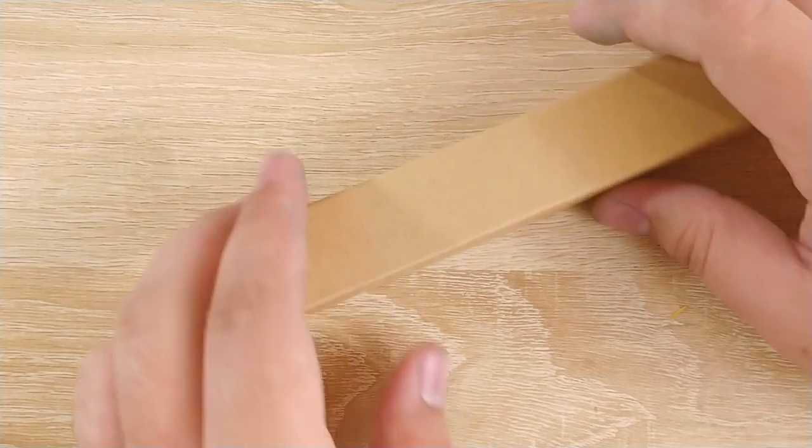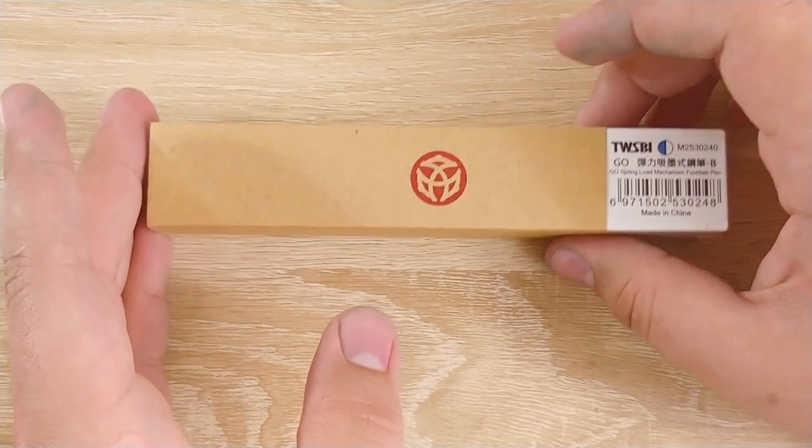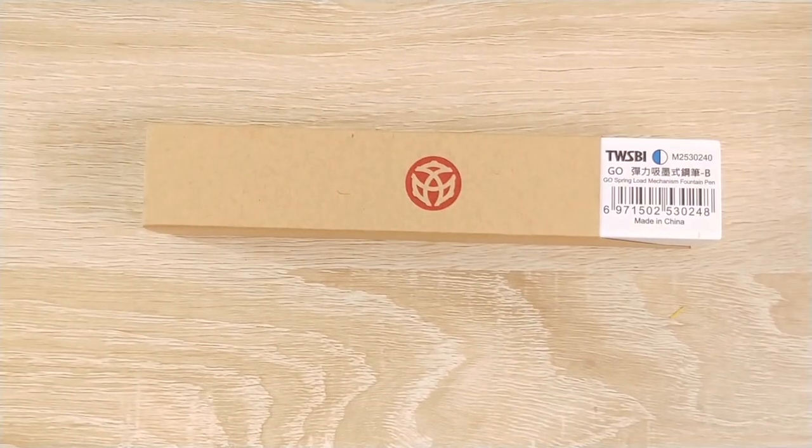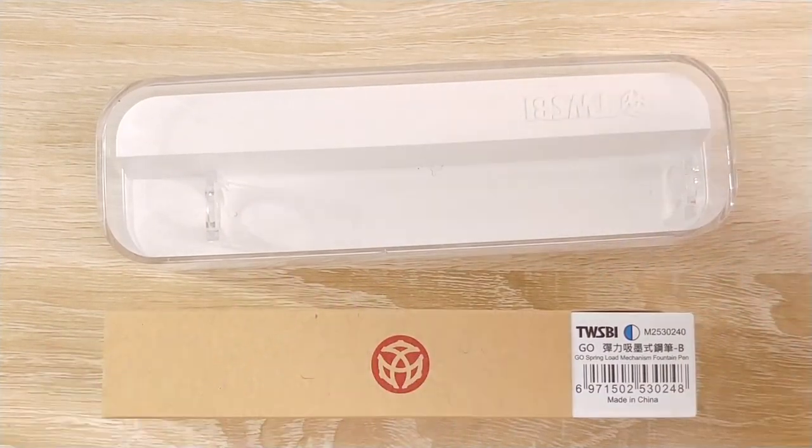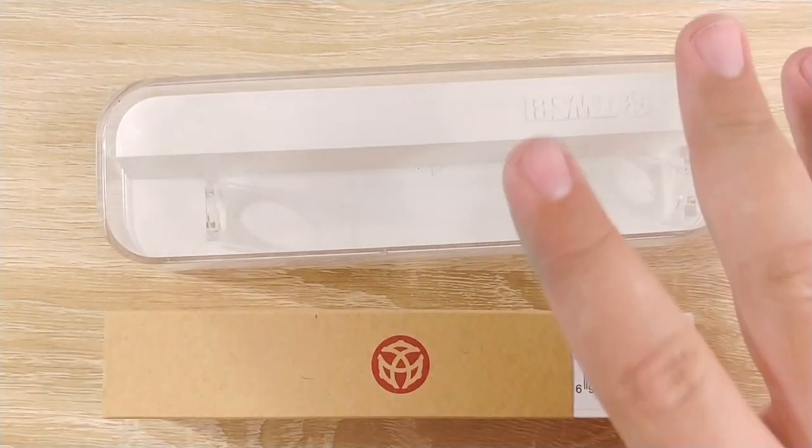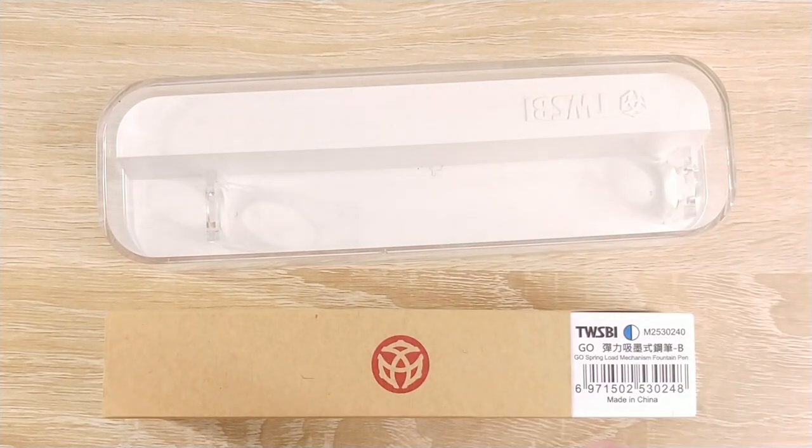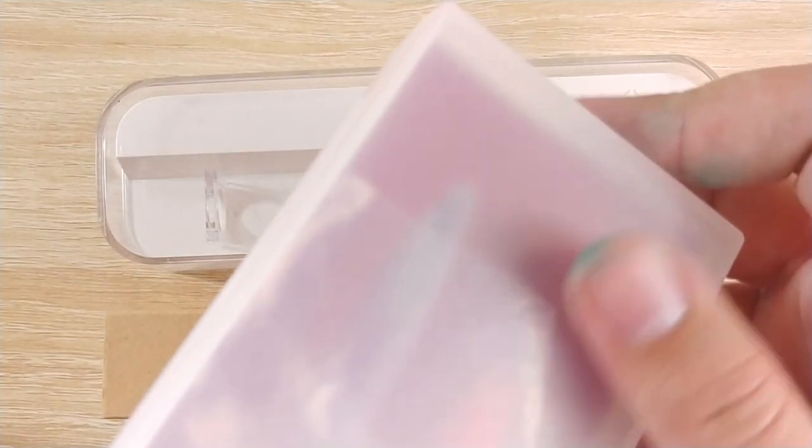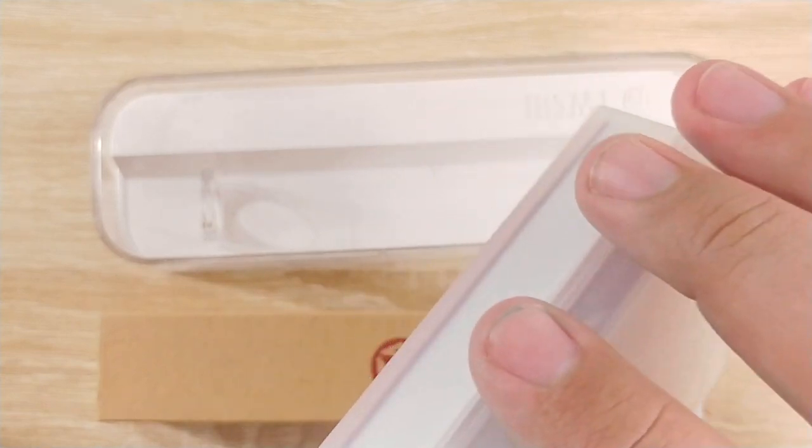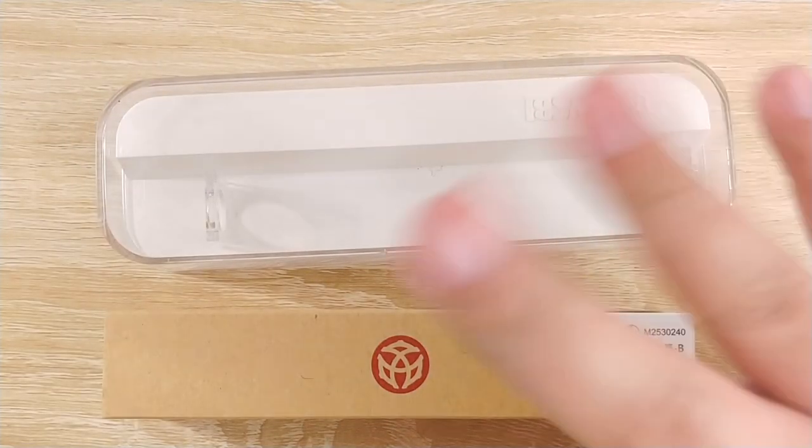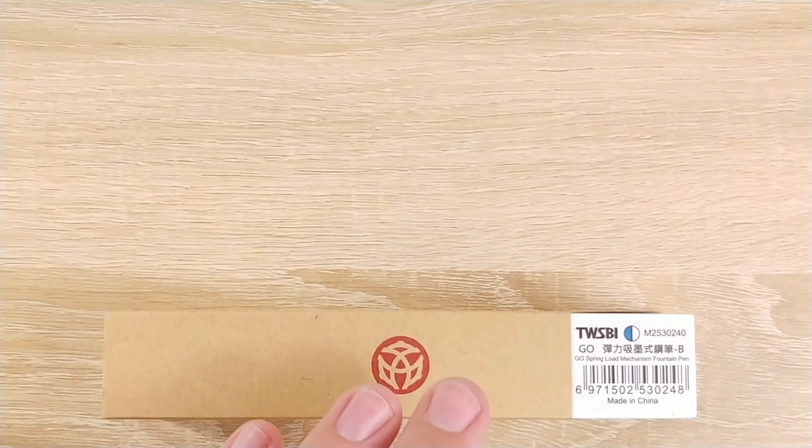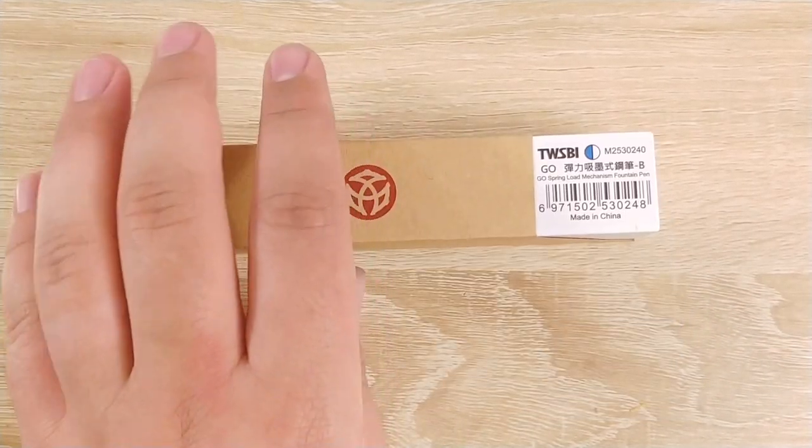Alright, so this is the Twisbi Go. Real quick, I just want to compare it to, this is the packaging for Twisbi 580, Mini, VAC 700, etc. The Twisbi Eco packaging is slightly more like this. This is for the Moonman M2, but it's kind of this plastic frosted thing. But Twisbi normally does a really good job with their packaging, so let's see how this one is.